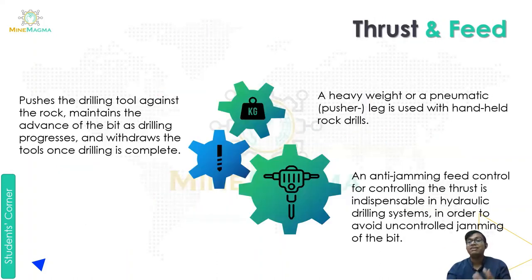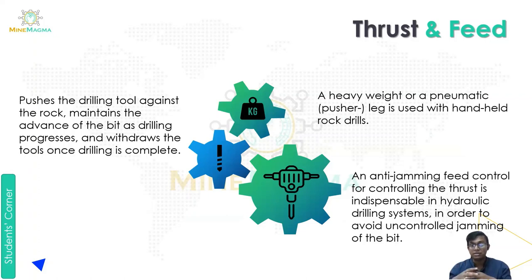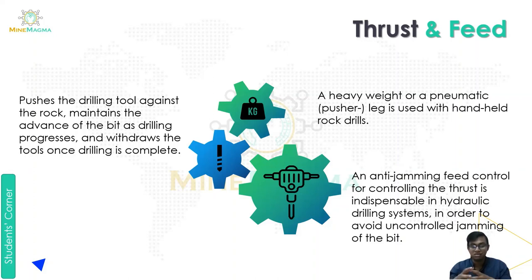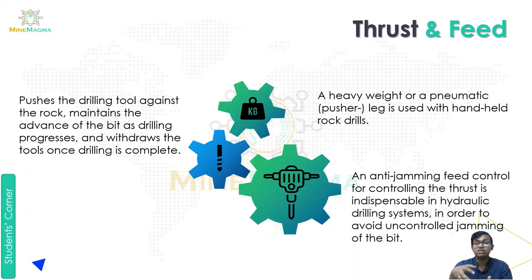Next is thrust and feed. A heavy weight or pneumatic pusher leg is used with hand-held rock drills. It pushes the drilling tool against the rock, maintains the advance of the bit as drilling progresses, and withdraws the tool once drilling is complete.